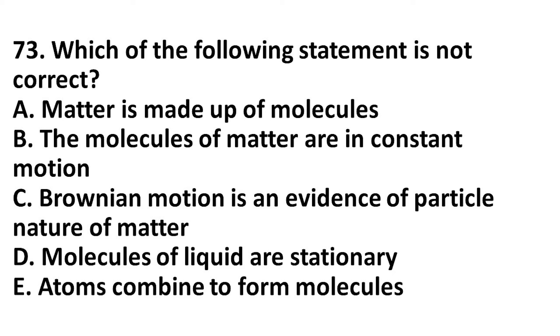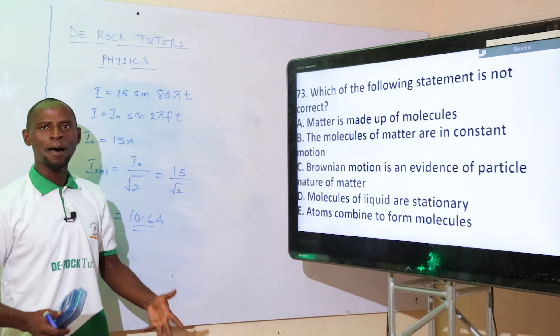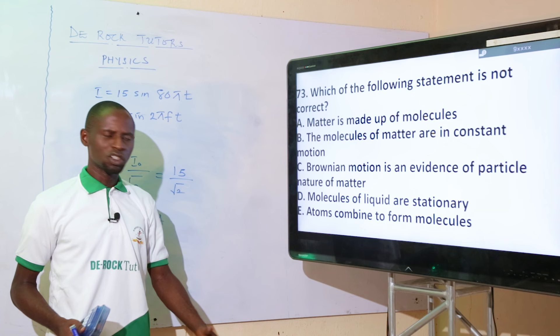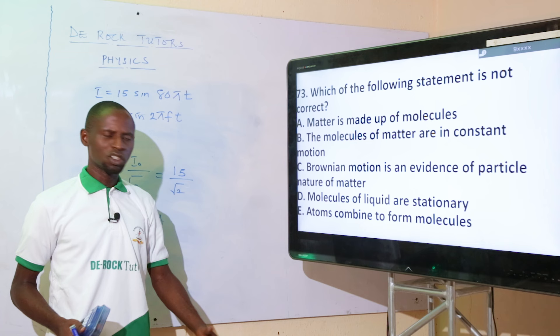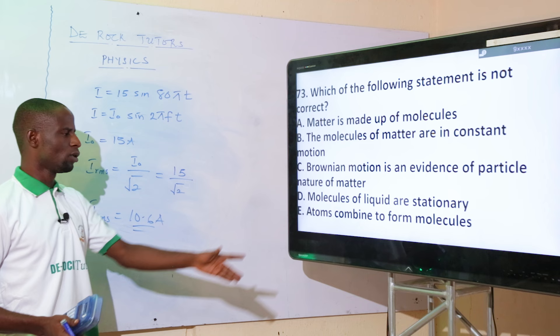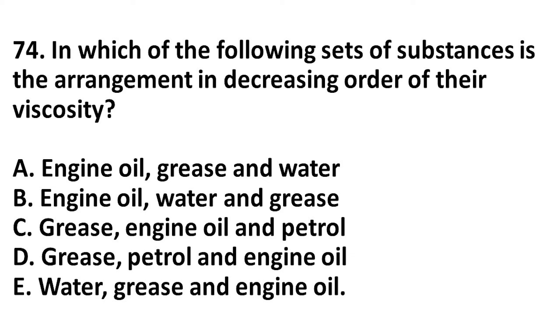Which of the following statements is not correct? Option A: matter is made up of molecules — correct, that is one of the assumptions of the particulate nature of matter. Option B: molecules of matter are in constant state of motion — correct. Option C: Brownian motion is evidence of the particulate nature of matter — correct. Option D: molecules of liquid are stationary — not correct, because molecules of liquid are always in a state of motion. The correct option is option D.